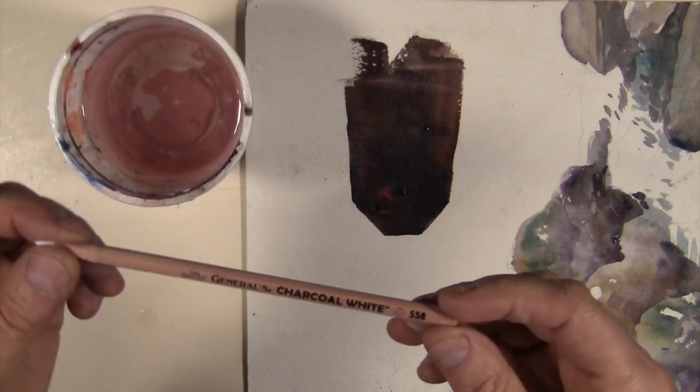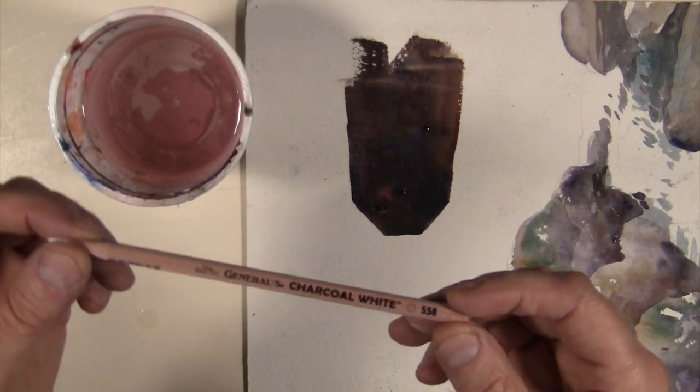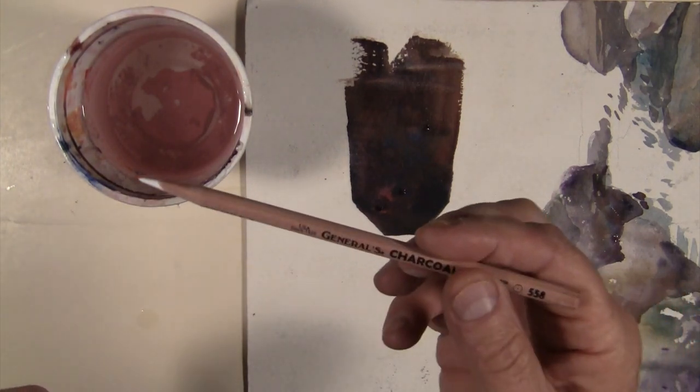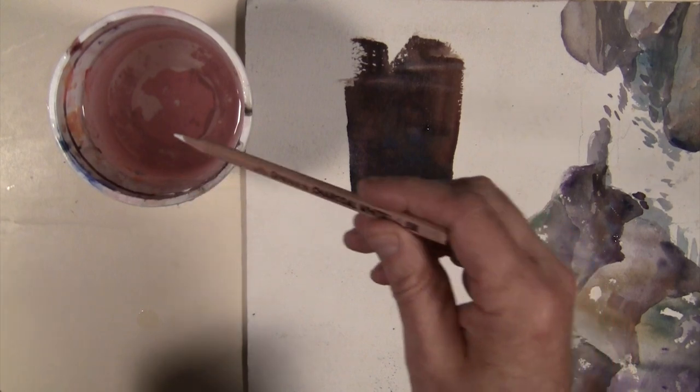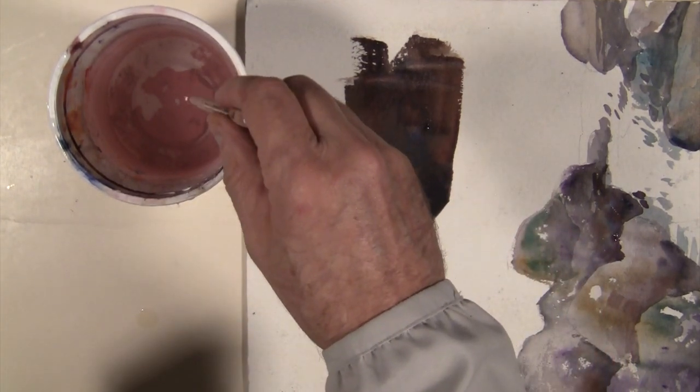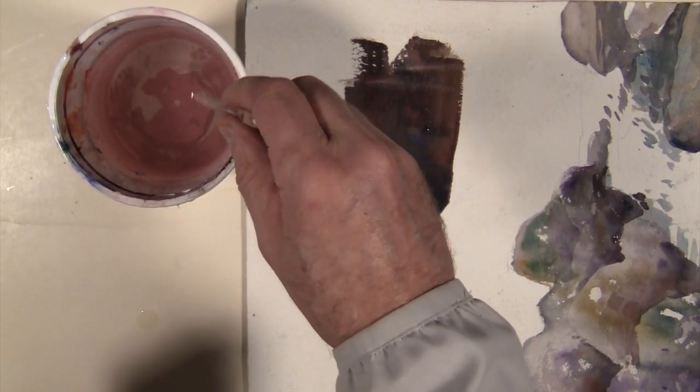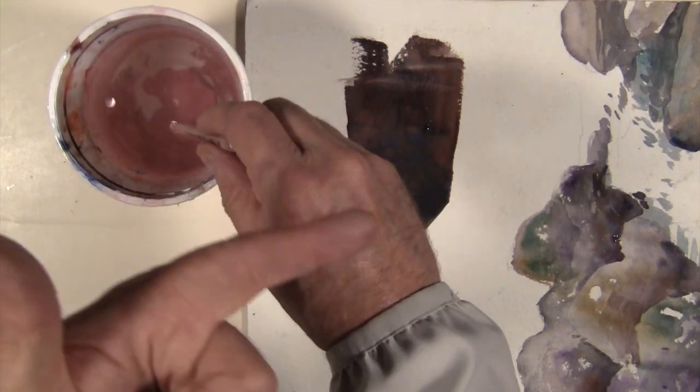With a white charcoal pencil - General's charcoal white pencil. So what they showed me, here it is. I'm not sure you can tell, it's a General's white. I'm going to dip it into a little bit of water. This is a charcoal pencil, and I'm dipping it into water. If you look at my finger, what I'm going to do is show you.